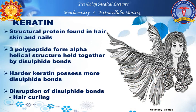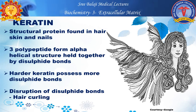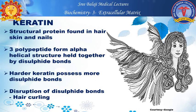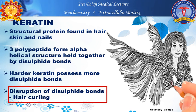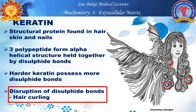The next structural protein is keratin, found in skin and nails. Three polypeptides form alpha-helical structures held together by disulfide bonds. The disulfide bonds cause hair curling, and hair straightening involves disruption of these keratin disulfide bonds.